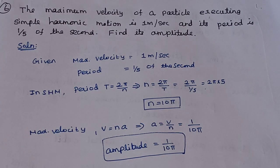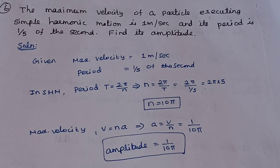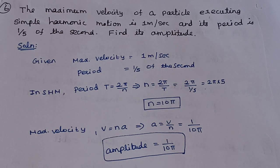The maximum velocity of a particle executing simple harmonic motion is 1 meter per second, and its period is 1/5 of a second. Find its amplitude.